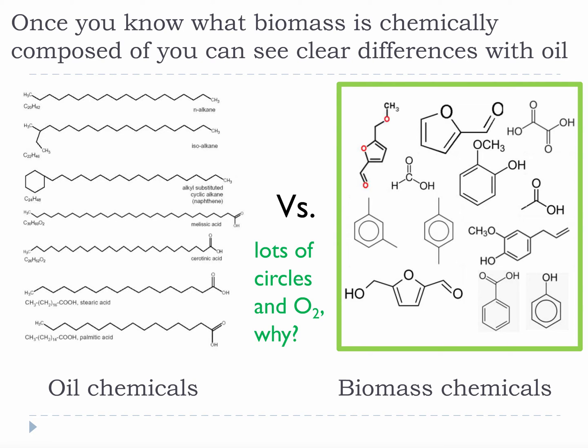The biggest difference between them is that oil chemicals are large straight lines, while the biomass chemicals are small, circular, and full of O's. They look very different, and this means that to turn one into the other, we have to do a lot of work and spend a lot of money. We have actually been turning oil chemicals into biomass chemicals for a very long time at considerable cost. So it is ironic that we are now trying to turn biomass chemicals into oil chemicals at considerable cost as well.